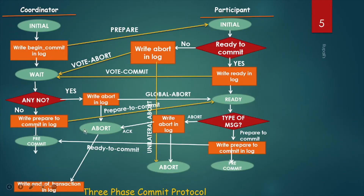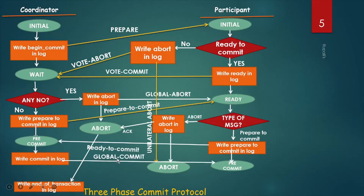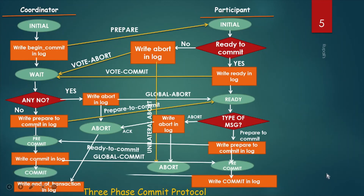After getting the ready-to-commit message from the participating site, the coordinator writes 'commit' in its own log and sends a global commit message to all participants. The participant writes 'commit' in its own log and goes to the commit state, sending an acknowledgement to the coordinator. When the coordinator receives the acknowledgement, it writes end-of-transaction in its own log.